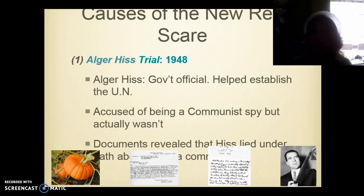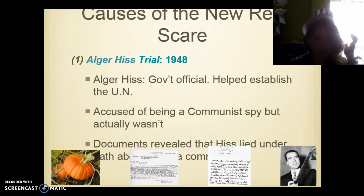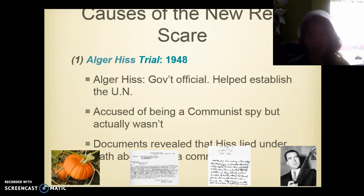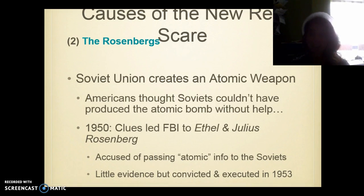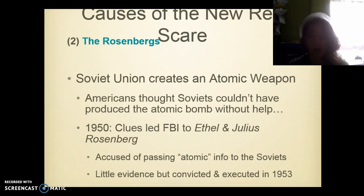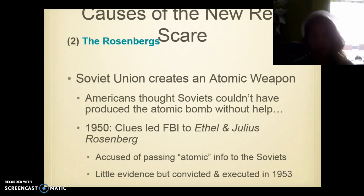This is called the New Red Scare because back in the 1920s, after World War I, when the Soviets turned communist, there was a first Red Scare — we already covered that. First is the Alger Hiss Trial of 1948. Alger Hiss was a government official who helped establish the UN. He was accused of being a spy, but he actually wasn't. However, documents revealed that Hiss lied under oath about communism. Second, the Rosenbergs: the Soviet Union created an atomic weapon, and Americans thought Soviets couldn't have produced the atomic bomb without help. The clues led to Ethel and Julius Rosenberg, who were said to be spies that gave up secrets about the atomic bomb. They had very little evidence, but since the Red Scare was going on, they were executed in 1953.